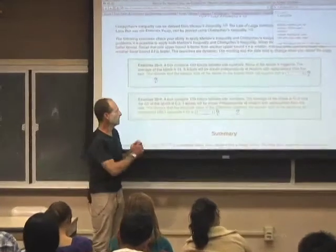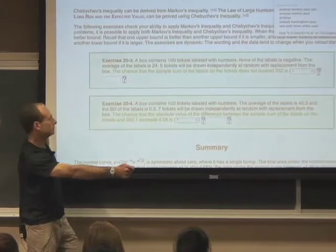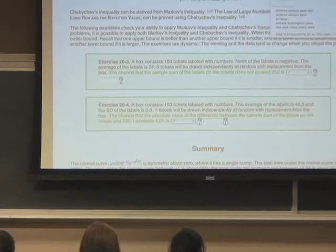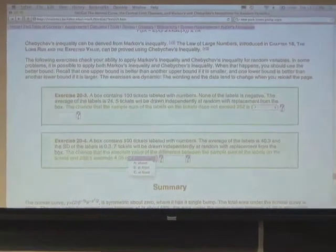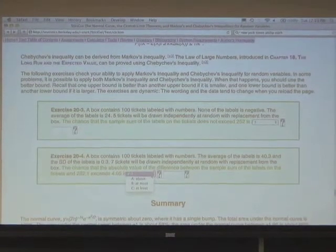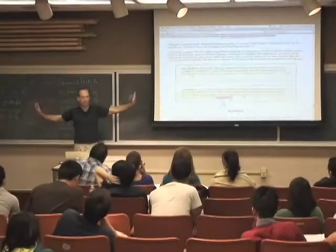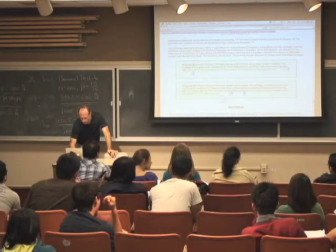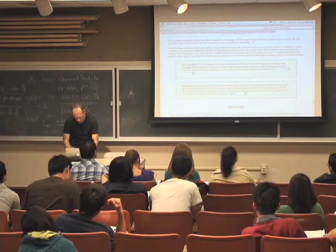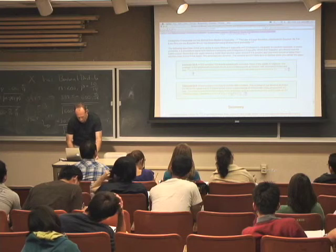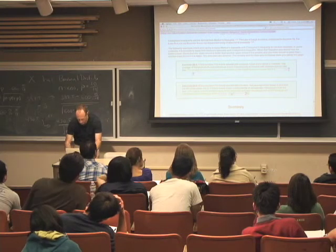So what's the chance that it's more than 5.1 standard errors away? First of all, does this give us an upper bound or a lower bound? The chance that you're very far away is at least something, or is at most something? At most. It's going to give us an upper bound. And this answer should be 1 divided by 5.1 squared.